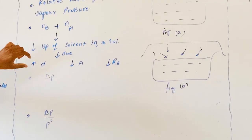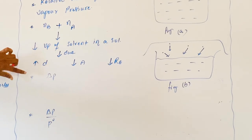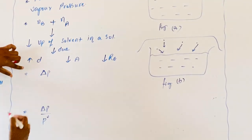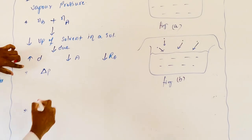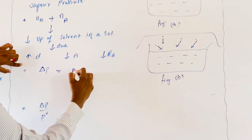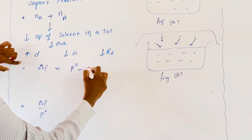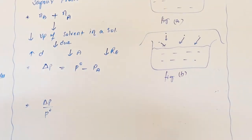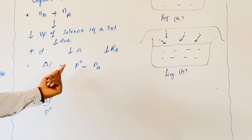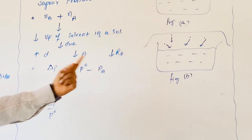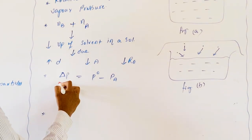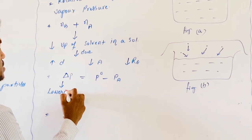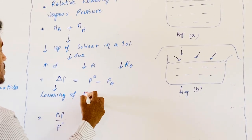Now, what is the lowering of vapor pressure? Lowering of vapor pressure is represented by ΔP. ΔP is equal to P₀ minus P_A. So ΔP represents lowering of vapor pressure.